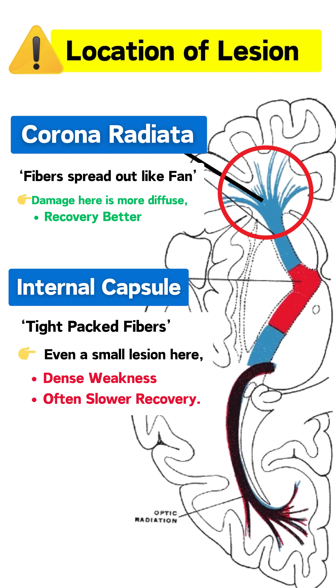On the other hand, in the corona radiata, fibers are spread out like a fan. Damage here is more diffuse, but neighboring fibers can compensate. Therefore, recovery potential is usually better.